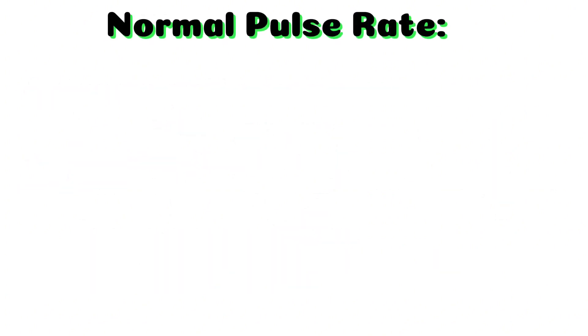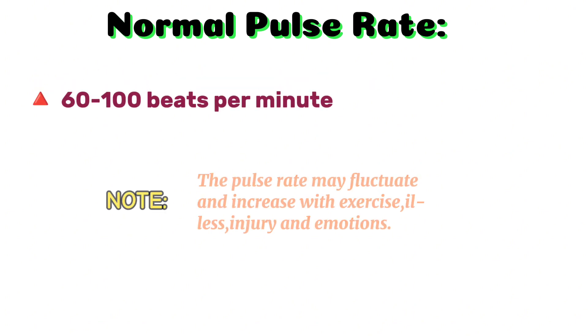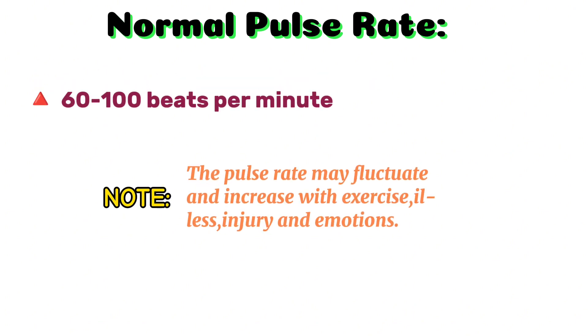The normal pulse for healthy adults ranges from 60 to 100 beats per minute. The pulse rate may fluctuate and increase with exercise, illness, injury, and emotions.